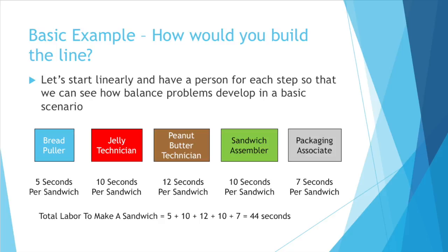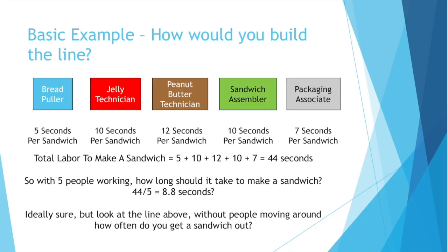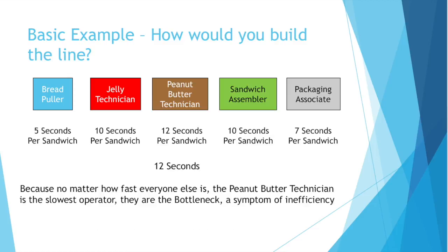Let's apply some math. You add together everyone's time and get 44 seconds — that's the labor required to make a sandwich. With five people, you'd divide 44 by five to get 8.8 seconds per sandwich if things were 100% efficient. But with the exact setup above, how long does it actually take to get a sandwich? That's right — 12 seconds. Because no matter how fast everyone else is, the peanut butter technician is the slowest operator. They are the bottleneck, a symptom of inefficiency.